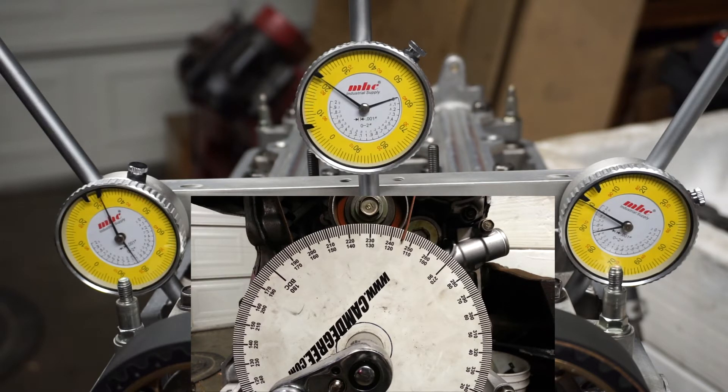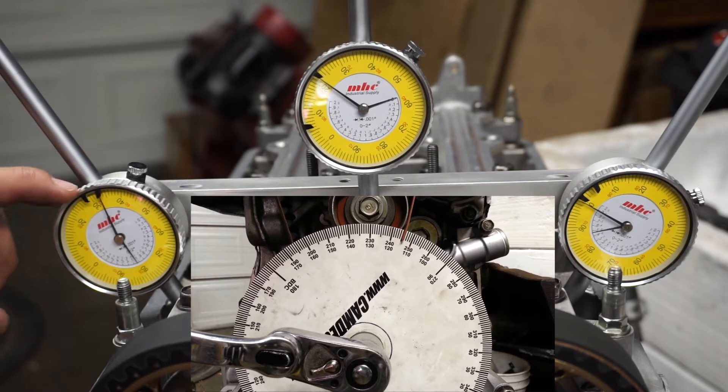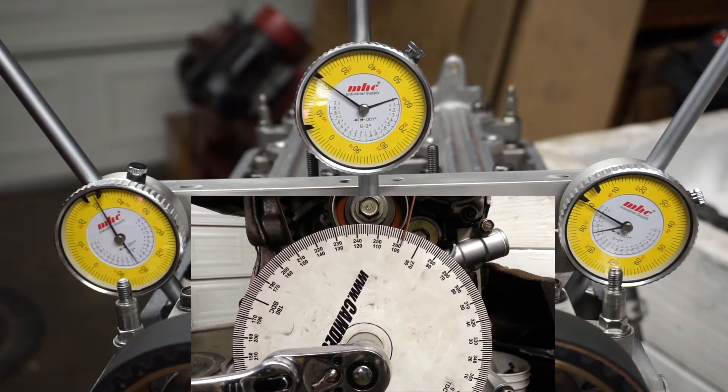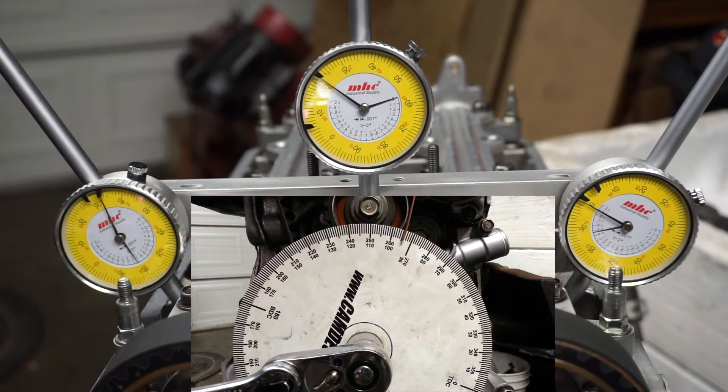We'll write that down - 115 - and then rotate so it hits peak. It'll go peak right here and then come back to where I stopped and take that note, what degree I'm at. I'm going to say 95. We'll add the two and it's 210 divided by 2 which is 105.